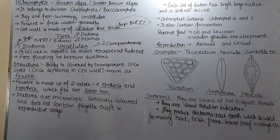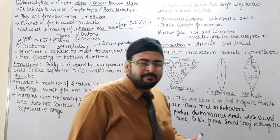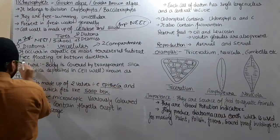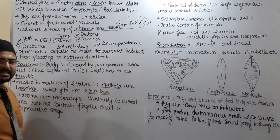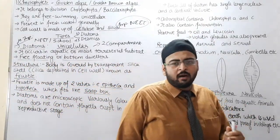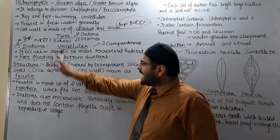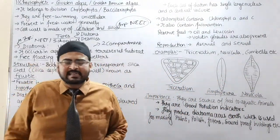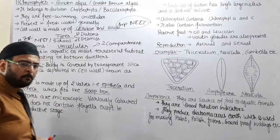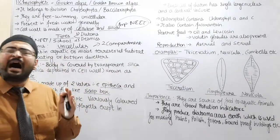Diatoms occur in aquatic or moist terrestrial habitat — ये पानी में भी मिल सकते हैं और गीली मिट्टी पर भी दिखाई दे सकते हैं. They are Unicellular and free floating or bottom dwellers. ये पानी की सतह पर तैरते हुए भी मिल सकते हैं और पानी के नीचे, bottom पर भी मिल सकते हैं.